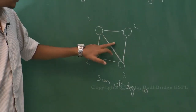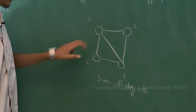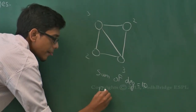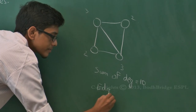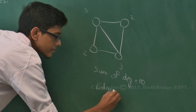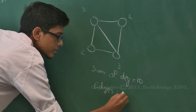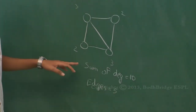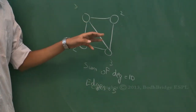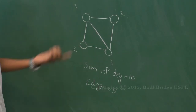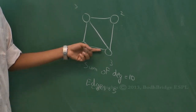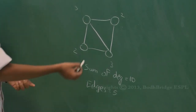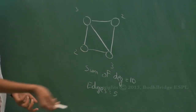We can count 5 edges in this graph. So the sum of degrees equals 10, which is twice the number of edges (2 × 5 = 10). For any graph, the sum of degrees will be twice the number of edges, because each edge contributes 1 to the degree of 2 different vertices.